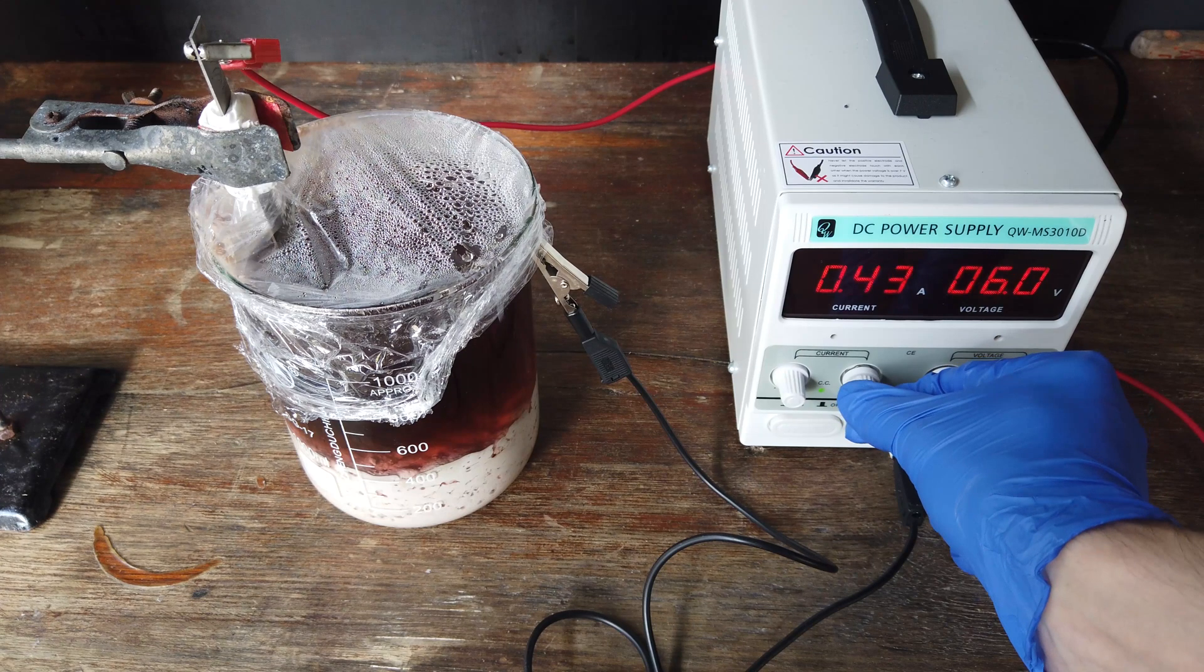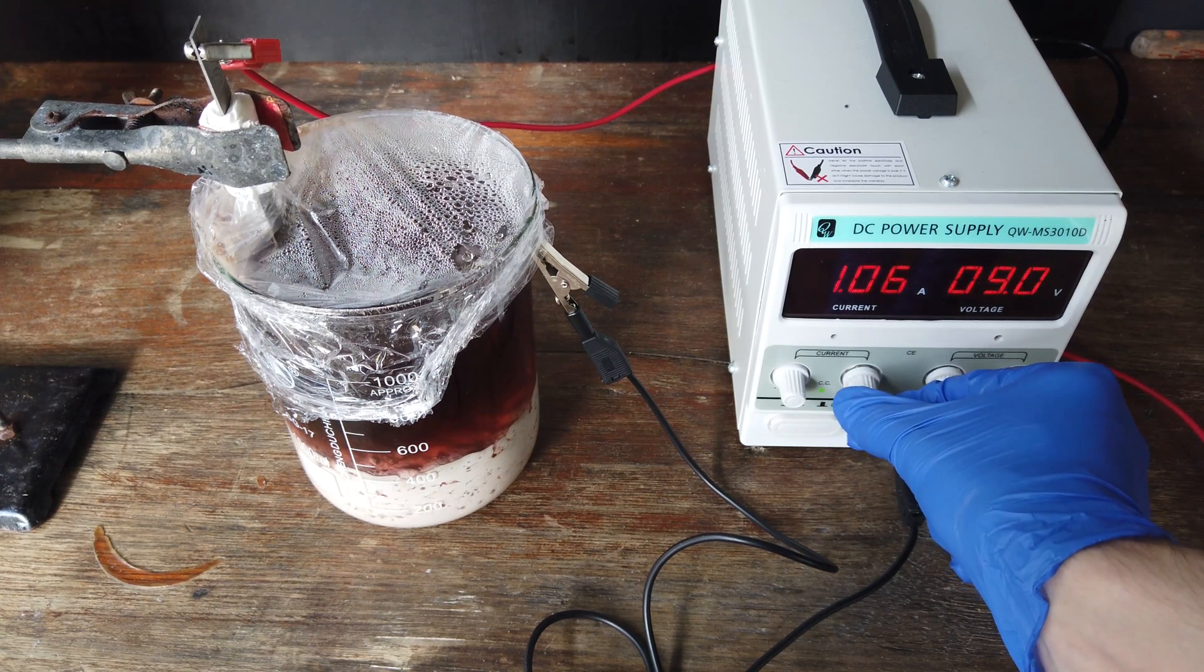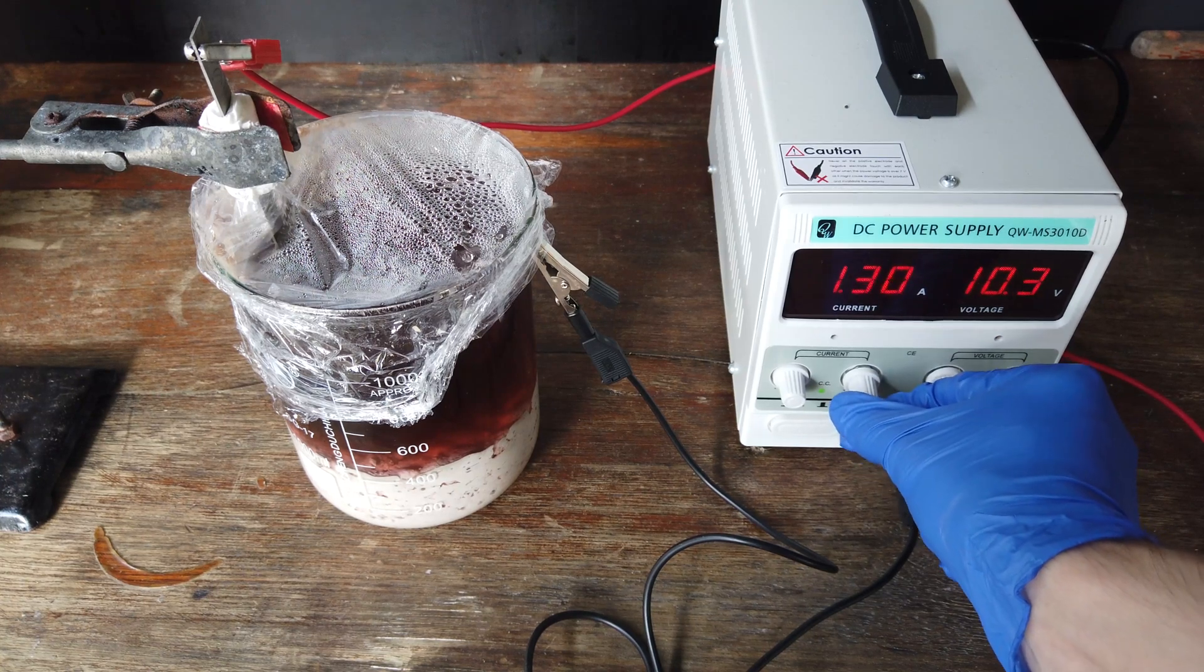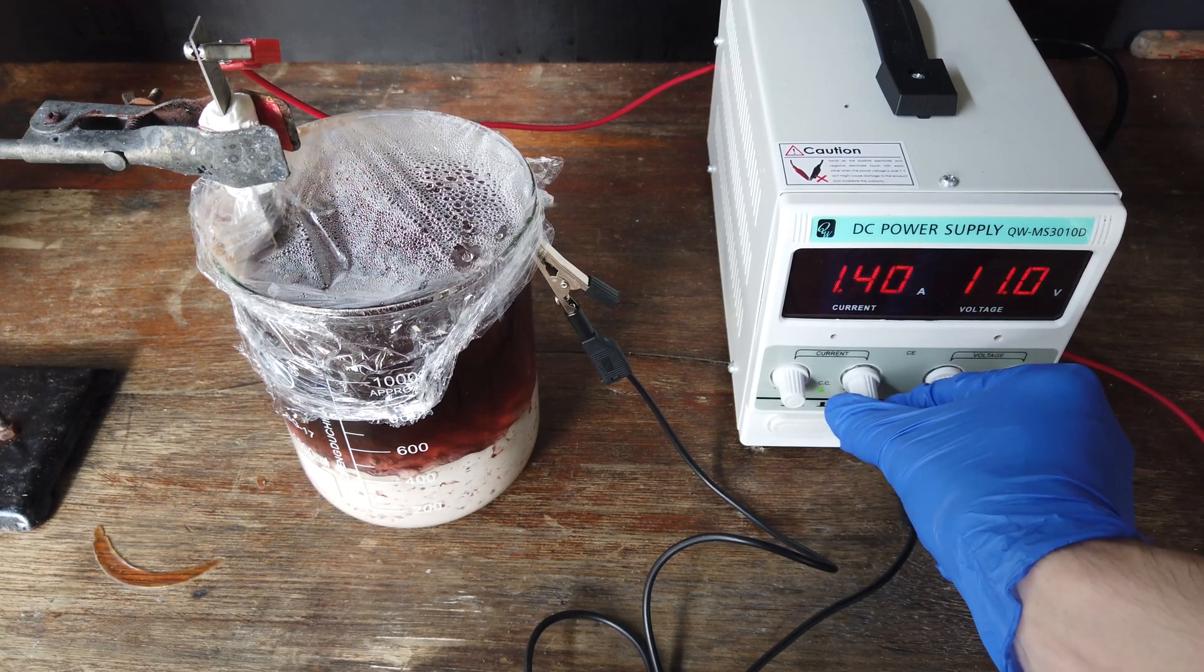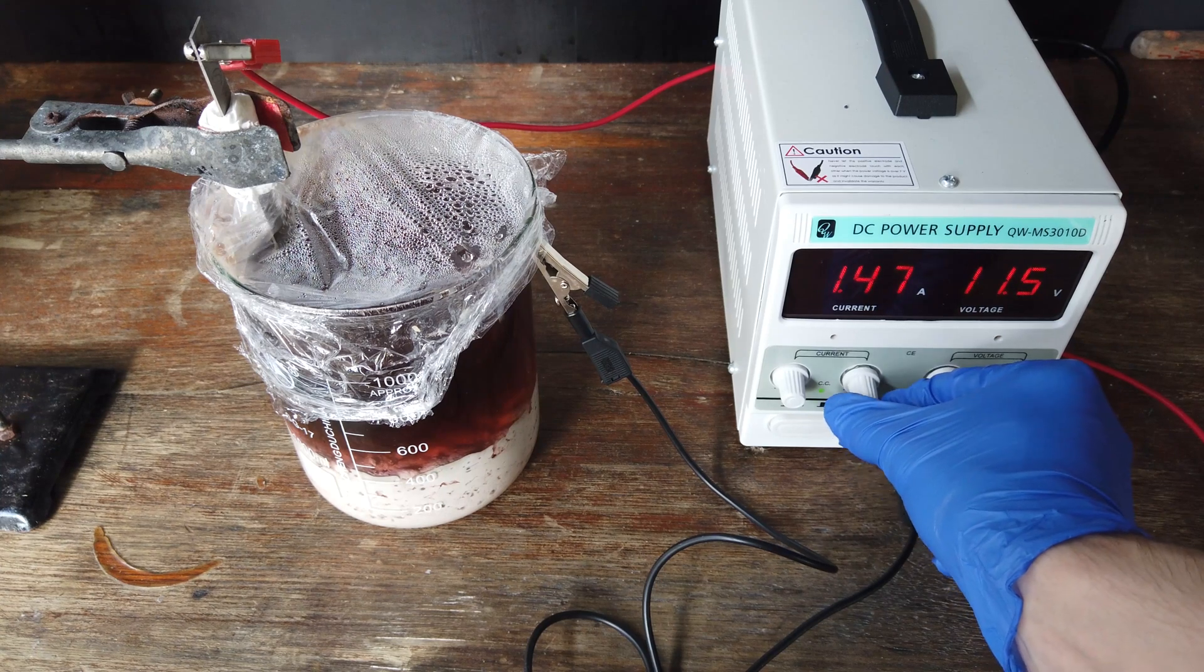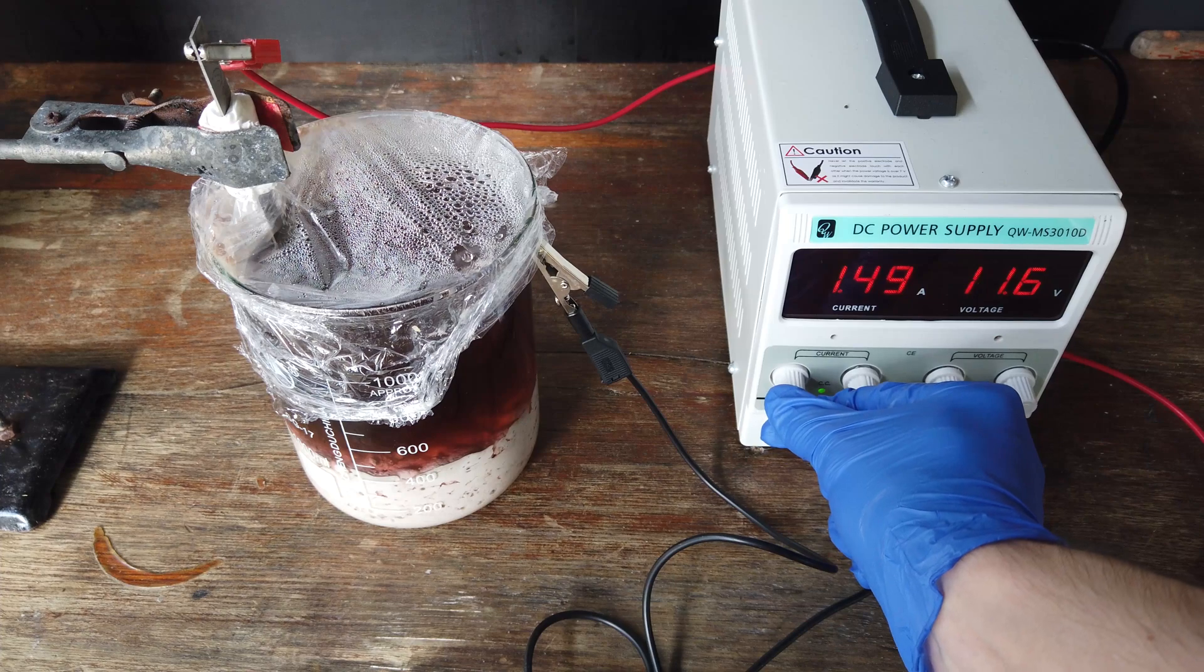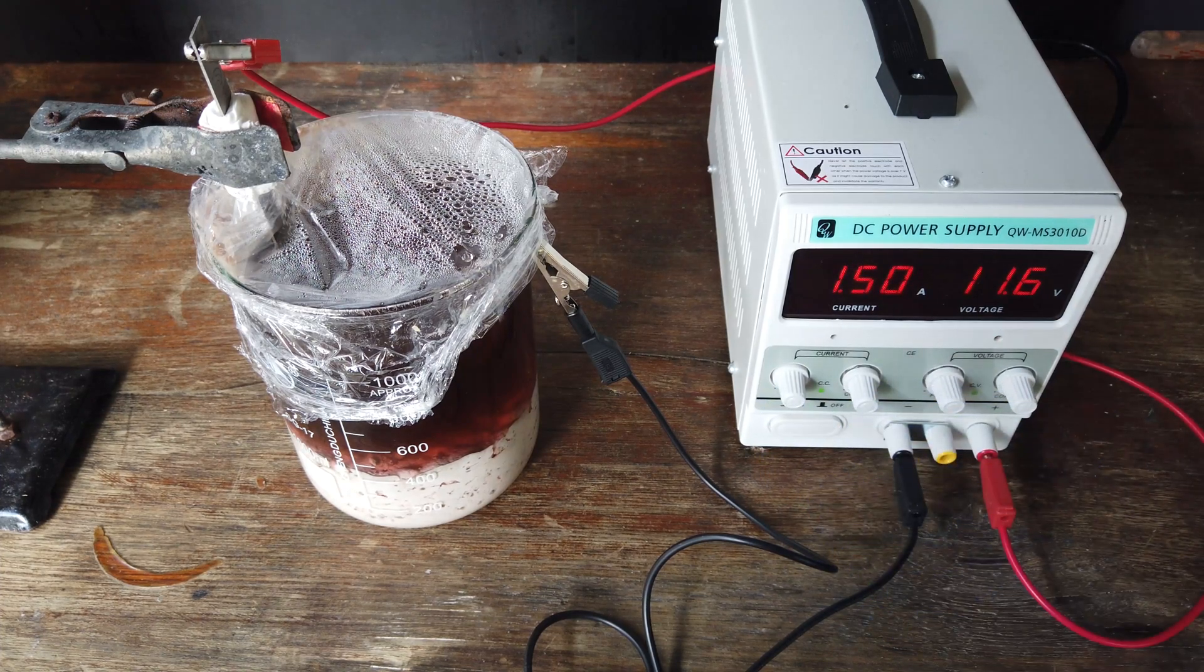What we actually need to do now, I think, is increase the current density. Because this will try at least to favour the reduction of metal ions over the reduction of hydrogen ions here. So, I'm going to increase the current all the way to 1.5 amps. And that's where we'll leave it.